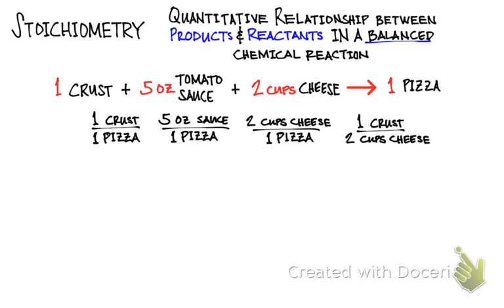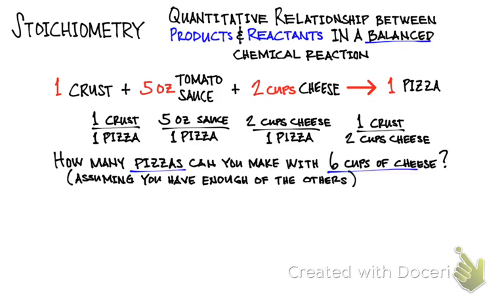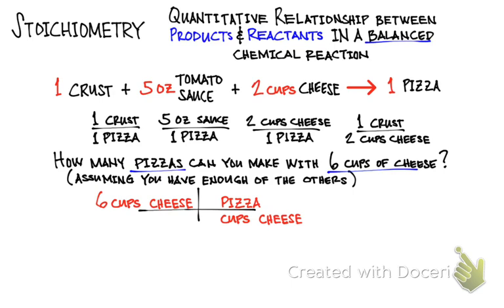These ratios are the quantitative relationship between the ingredients and the pizza. You can use these ratios to answer questions such as this one: how many pizzas can you make with six cups of cheese, assuming that you have enough supply of all the other ingredients? Here we have six cups of cheese. We can use dimensional analysis to convert our six cups of cheese into the number of pizzas. The ratio between cheese and pizza is two to one — we put cups of cheese at the bottom and number of pizzas up top, giving us a two-to-one ratio. The cups of cheese cancel out and we get three pizzas.